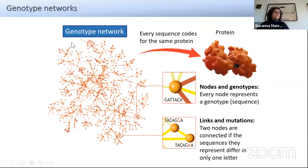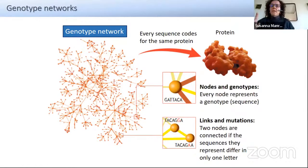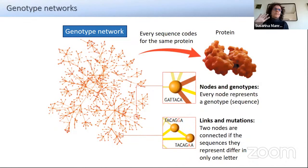A genotype network in the case of proteins would be all sequences that map onto the same sequence of amino acids. I want to remark that I will be using different definitions of phenotype. The global properties we will see for these networks are not strongly dependent on the definition of phenotype, which is good because what we are looking for are general properties of these spaces.